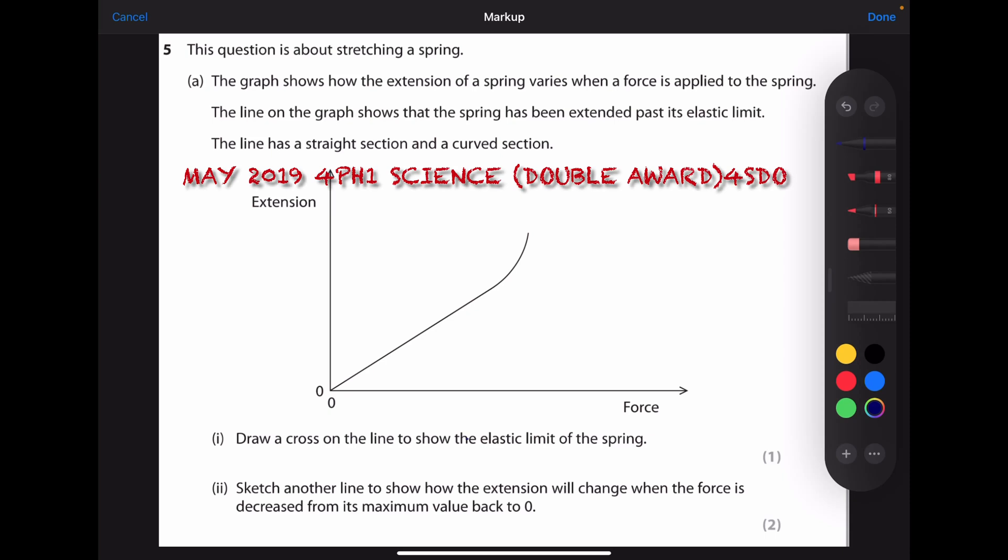This question is about stretching a spring. The graph shows how the extension of a spring varies when a force is applied to the spring. The line on the graph shows that the spring has been extended past its elastic limit. The line has a straight section and a curved section. I draw a cross on the line to show the elastic limit on the spring. Elastic limit means the spring's highest limit before the spring's plastic deformation can occur.